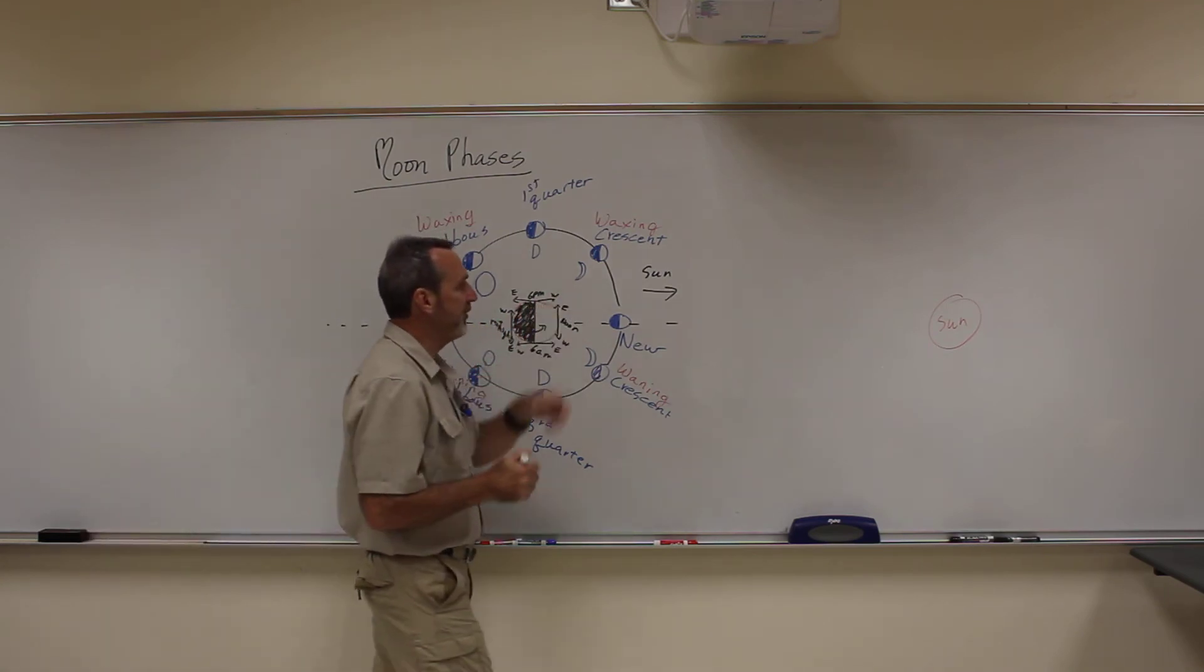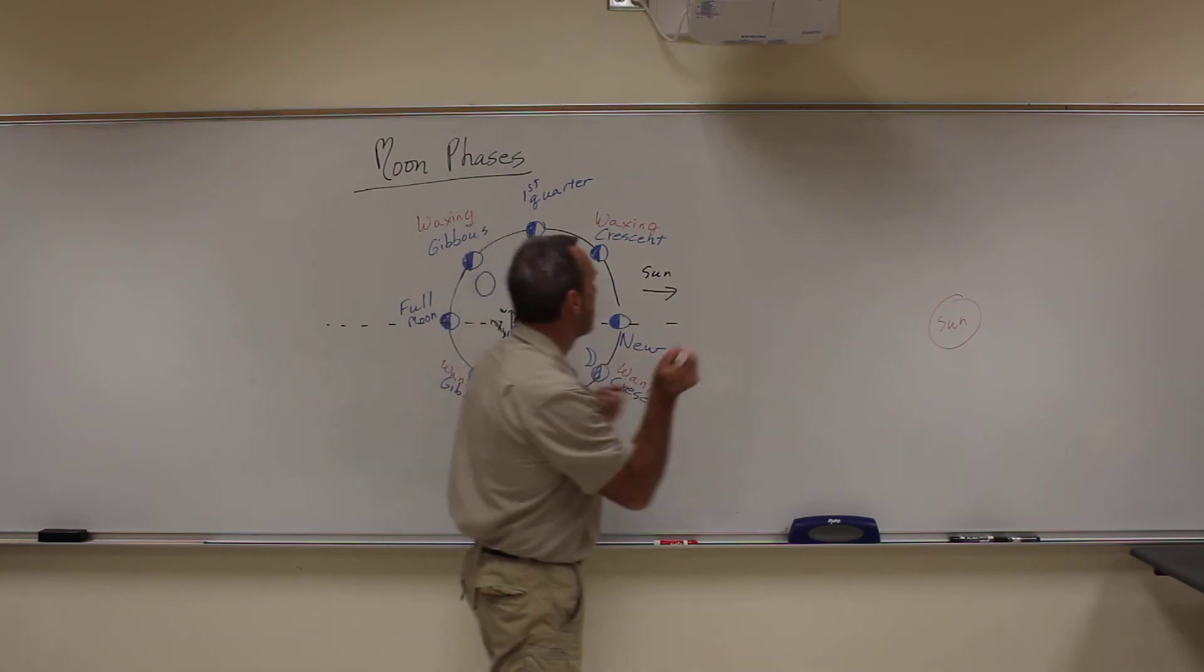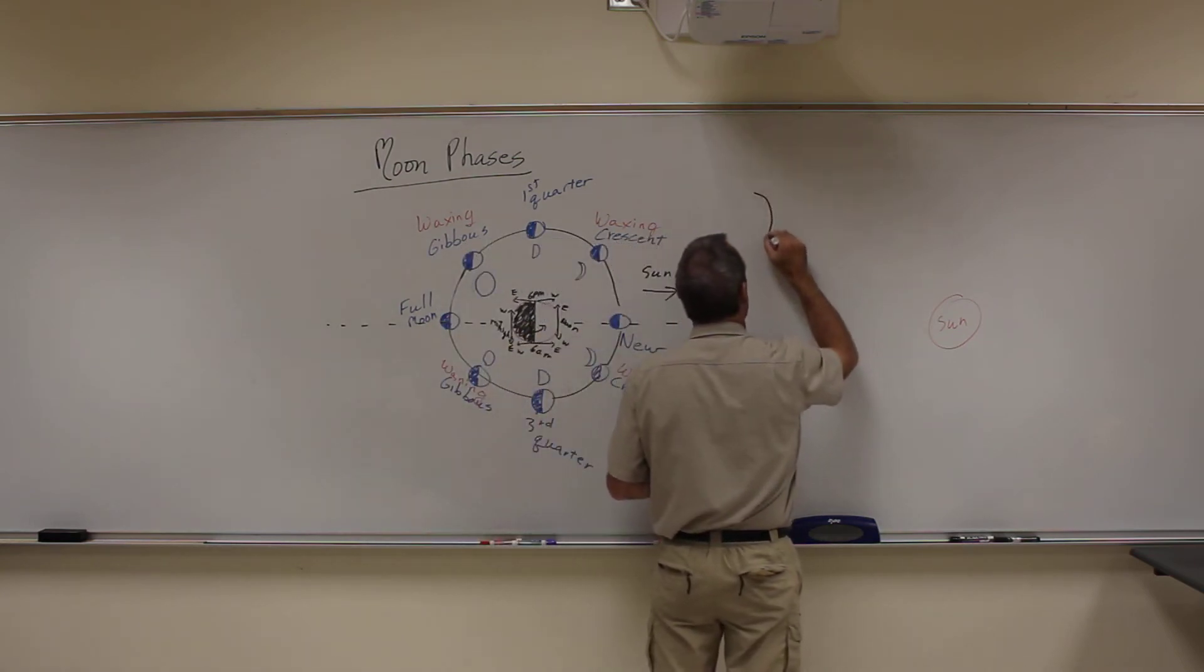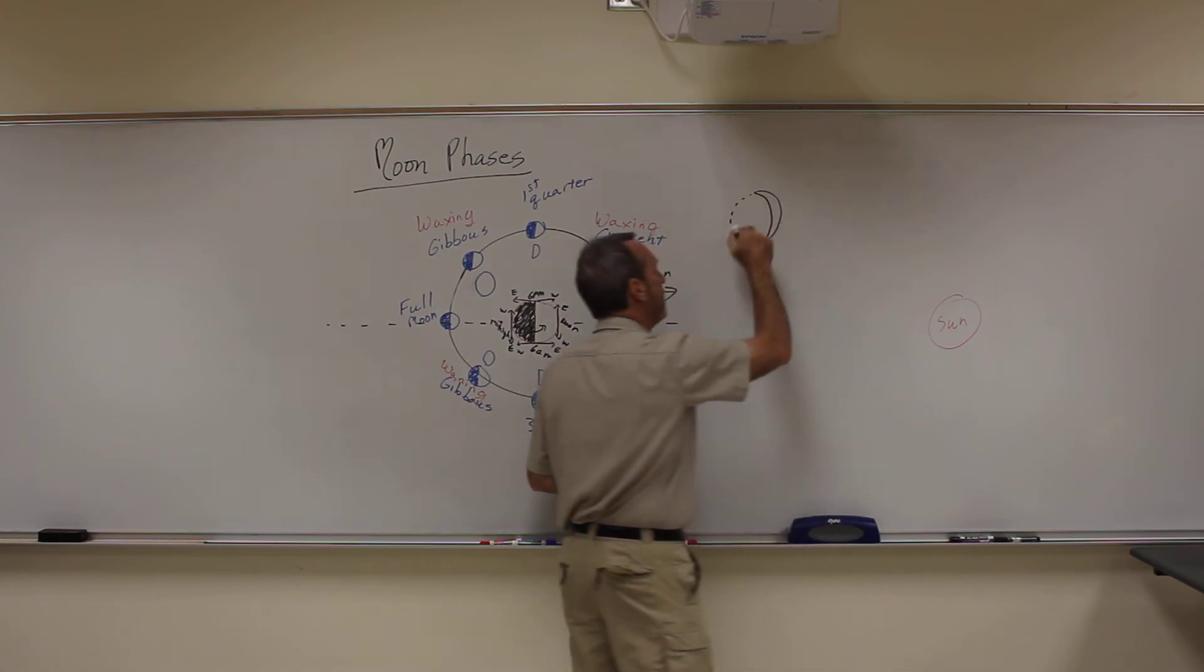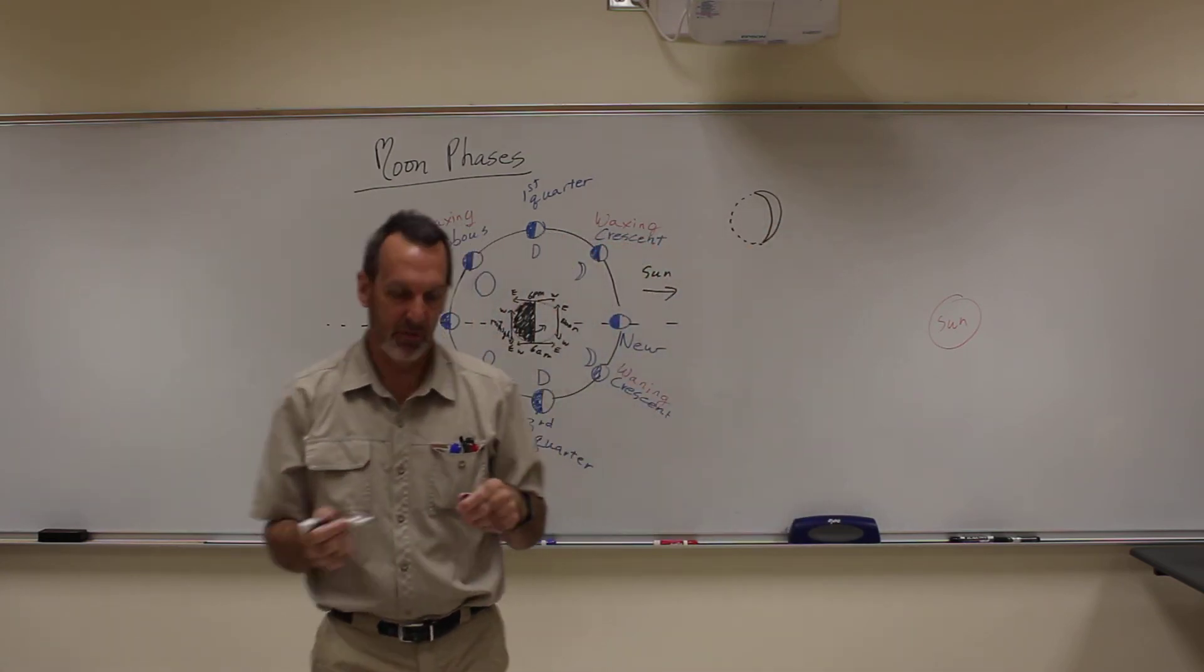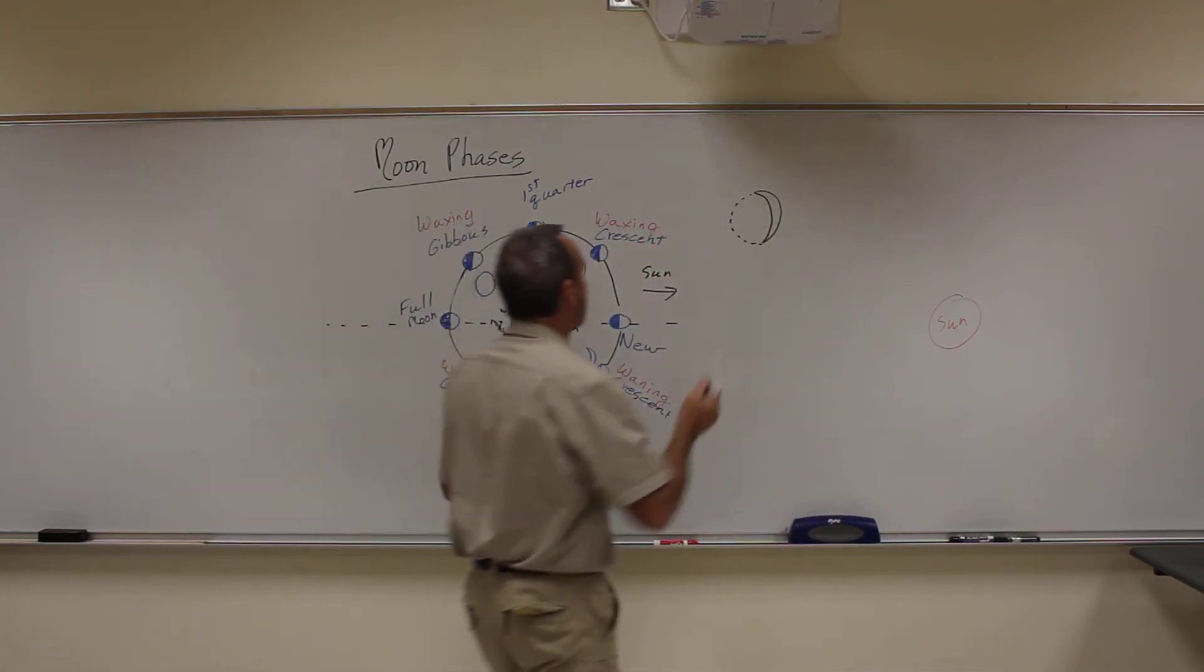This also creates some interesting things too. If you've ever looked outside and saw a crescent moon, but you saw the lit up side, you saw the part that's usually in darkness. We call this Earth shine.